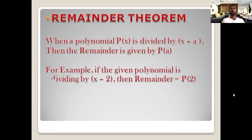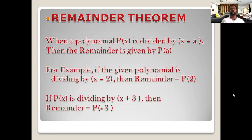For example, if the polynomial is divided by x minus 2, equating x minus 2 equal to 0 gives x equal to 2, so the remainder is p(2). Again, if p(x) is divided by x plus 3, equating to 0 gives x equal to minus 3, so the remainder is p(minus 3).